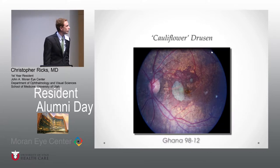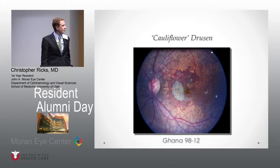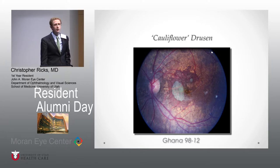We'd also see what we termed cauliflower drusen — just these big, beefy, unique-looking, almost CNV-like but interesting phenotype — again not associated at all with any of the chromosomes we know affect AMD.